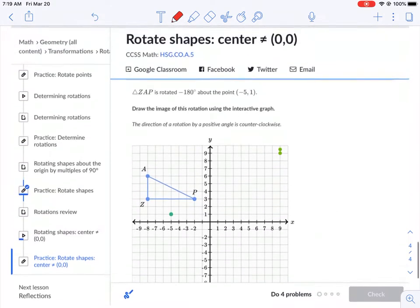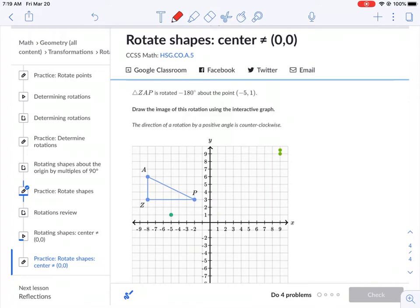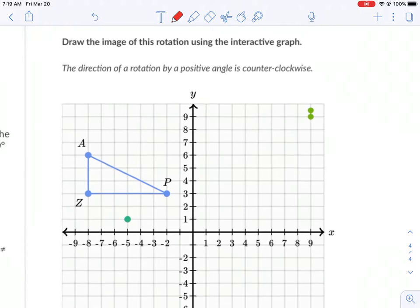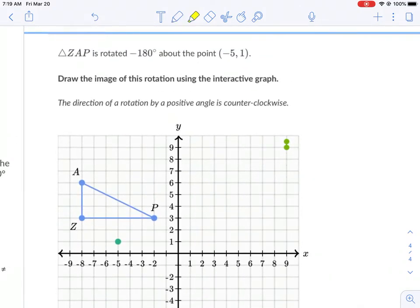This is a good problem for any geometry class but especially an honors geometry class. So let's go ahead and get started and dissect the information that's given to us. Triangle ZAP is rotated negative 180 degrees about the point negative five one. Draw the image of its rotation using the interactive graph. I have this on notability just because I find it a little bit easier to use.